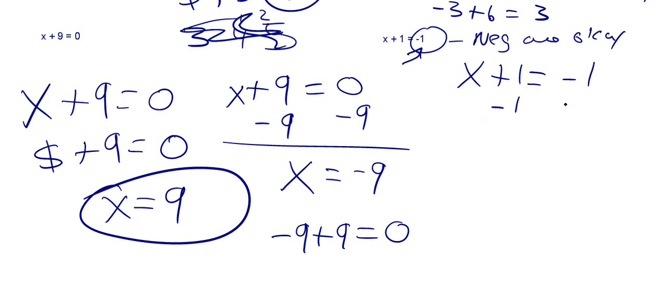Just do your inverse operation. So if you're adding 1 here, to get rid of it, you've got to subtract 1. If you subtract 1 from this side, you've got to subtract 1 from the other side. You've got x is equal to negative 2. We plug that in. Negative 2 plus 1, and that is equal to negative 1. So we've got the right answer.